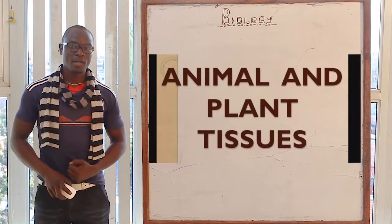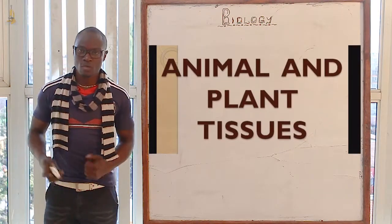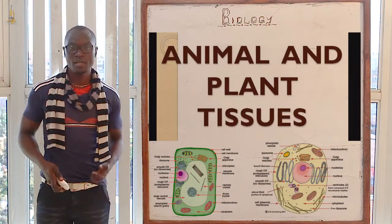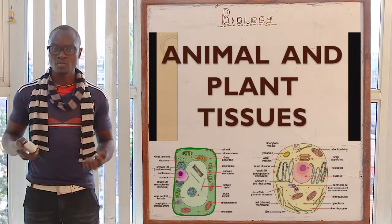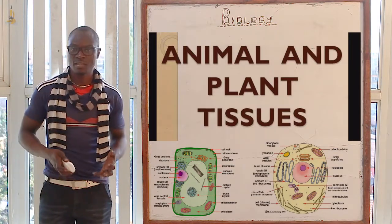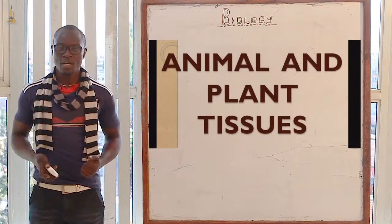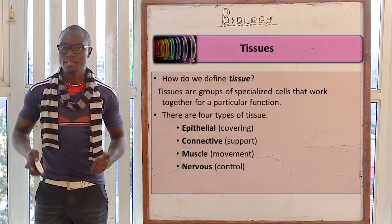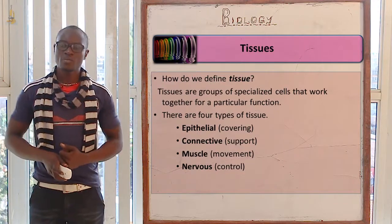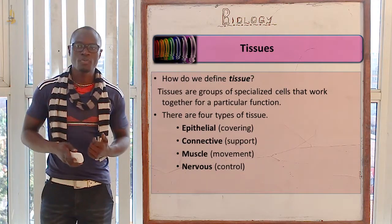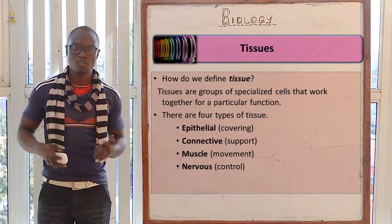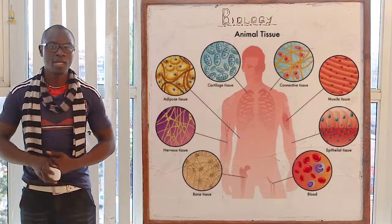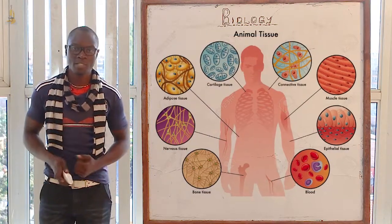Welcome to this class where we are going to discuss about tissues. In the previous class we discussed about the cell and we saw the different types of cells in the organisms that we have. Now let's define what a tissue is: a tissue is a group of similar cells working together to perform a specific function. Let's begin with the animal tissues, then we'll complete with the plant tissues.